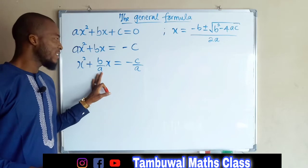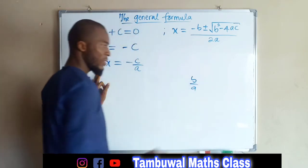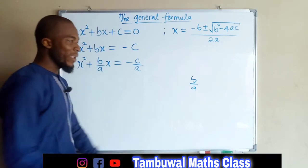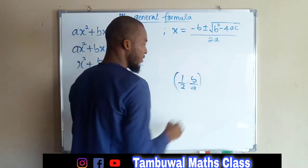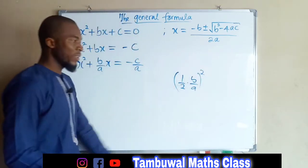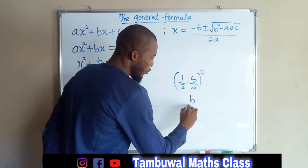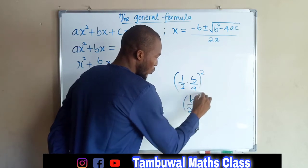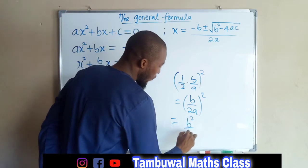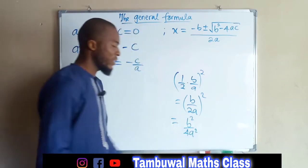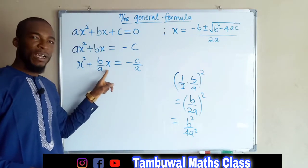So what we need here is the coefficient of x, which is b over a. We take half of it, then square the result. Half of b over a is b over 2a. Squaring this, we obtain b squared over 4a squared. This is obtained by taking the square of half of the coefficient of the middle term, which is x.